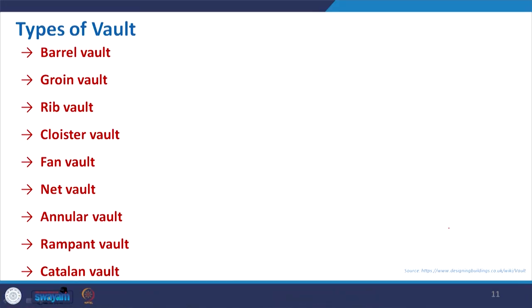Coming to the types of vaults - depending on shape and other things there are many classifications. The types I have picked are: barrel vault, groin vault, rib vault, cloister vault, fan vault, net vault, annular vault, rampant vault, and Catalan vault. We will go through what exactly they are and how they differ in appearance.